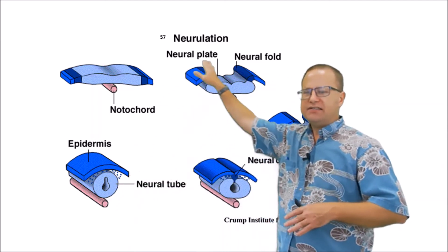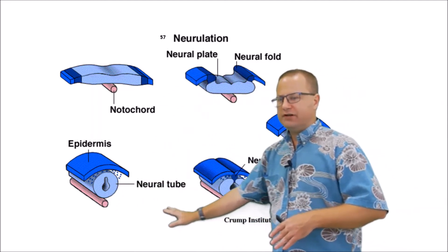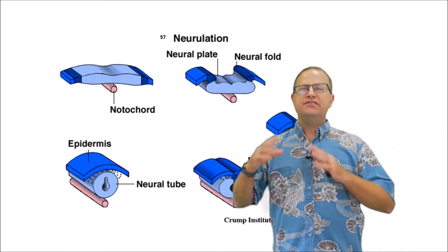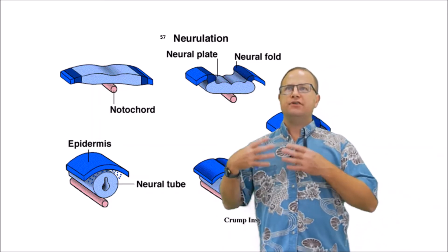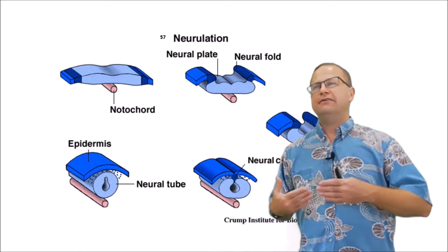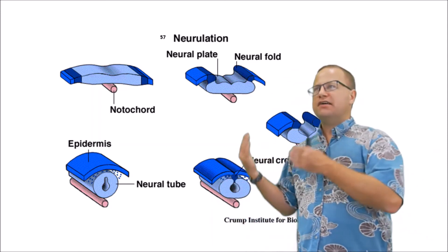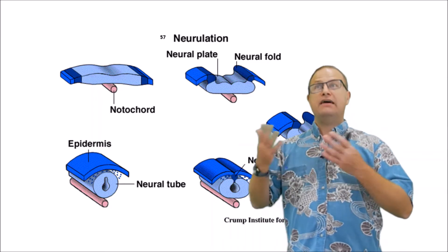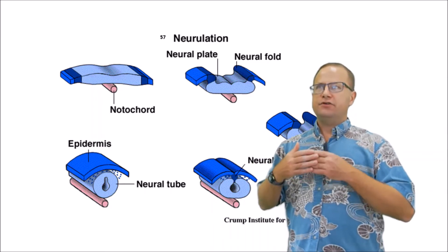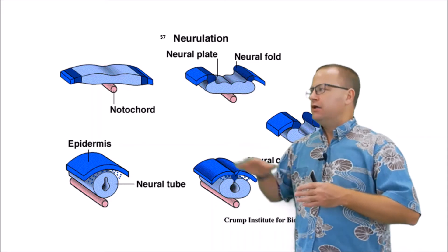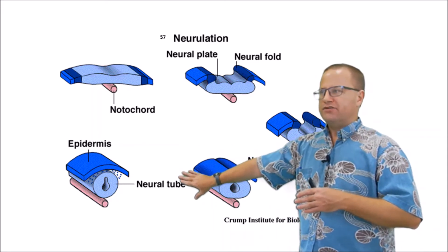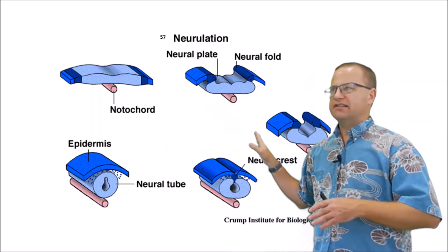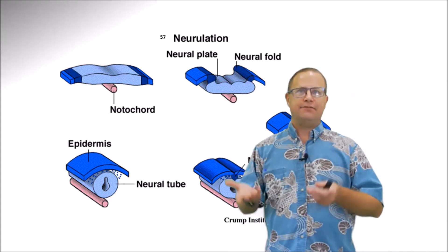This process of neurulation is actually a very, very delicate process, and it requires a lot of folic acid. This is the reason why we encourage women of childbearing years to get enough folic acid in their diet, because this process happens very early on in development — a lot of times women may not even know they're pregnant yet. So it's a good preemptive measure to take folic acid to encourage proper neural tube formation. If this goes awry we can have some very bad abnormalities like spina bifida or even anencephaly.